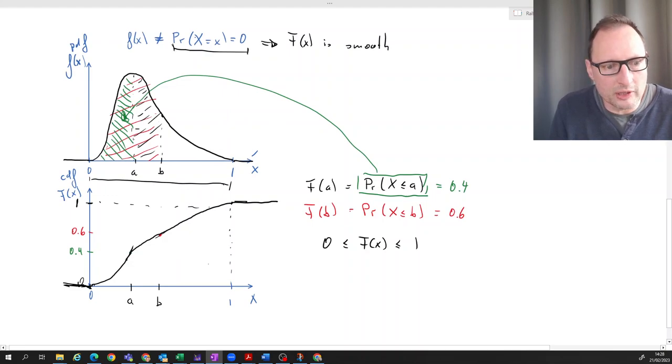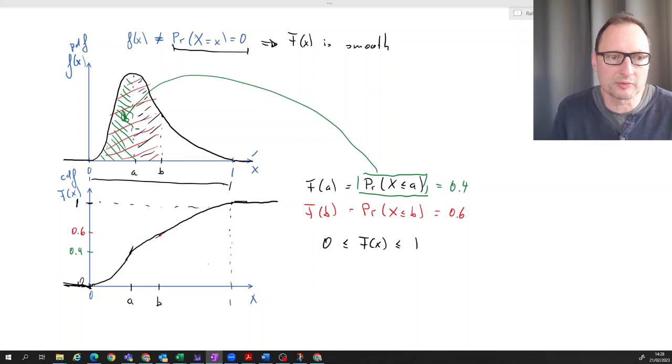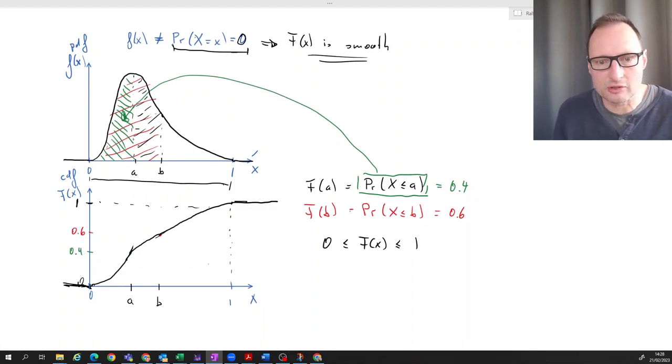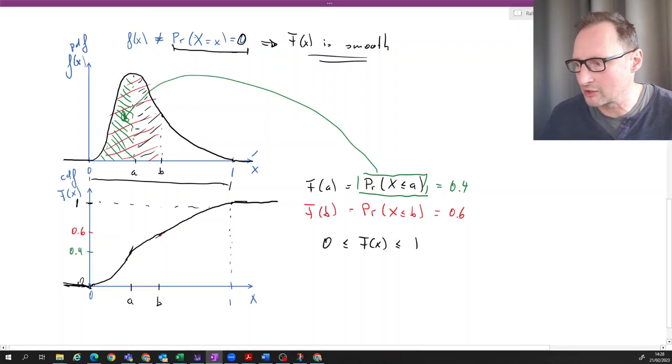Because at no point, as we move from A to A plus a little bit, we will see a jump of probability, because this probability is always zero. So that means that the CDF is going to be smooth. So hopefully that helps you understand how the PDF and the CDF of a random variable are related to each other.